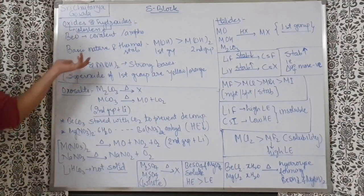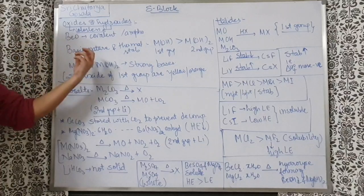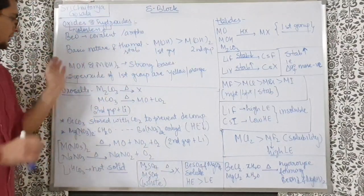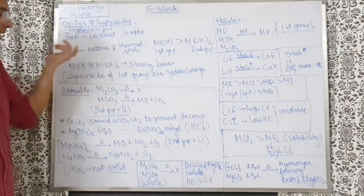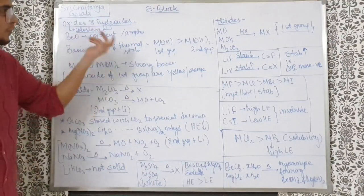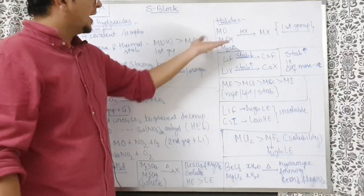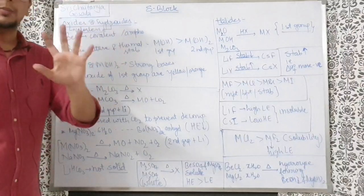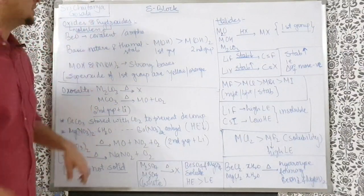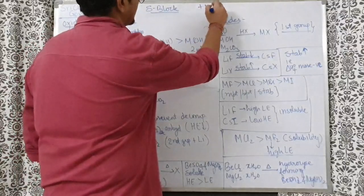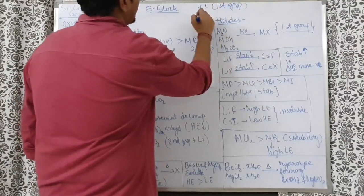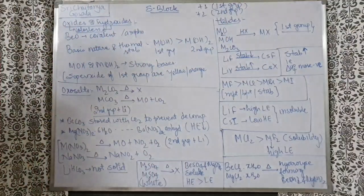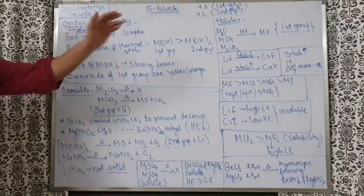MOH and M(OH)2 are used to indicate first and second group compounds clearly — for example, MO, MOH, M2CO3 for the first group. First group elements show +1 oxidation state, and second group shows +2 oxidation state. Understanding this helps identify which compound belongs to which group. Superoxides of the first group are colored yellow or orange, so if a sodium oxide sample looks yellowish, it likely contains a superoxide impurity — since oxides and peroxides of these groups are colorless.